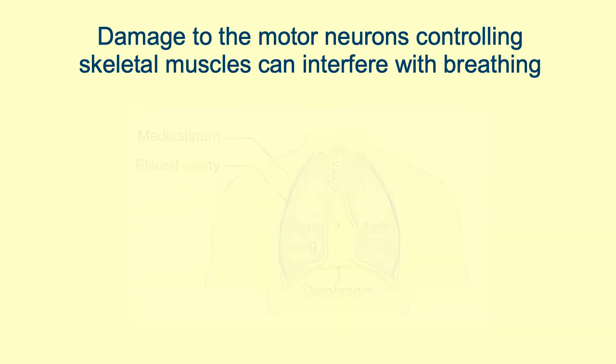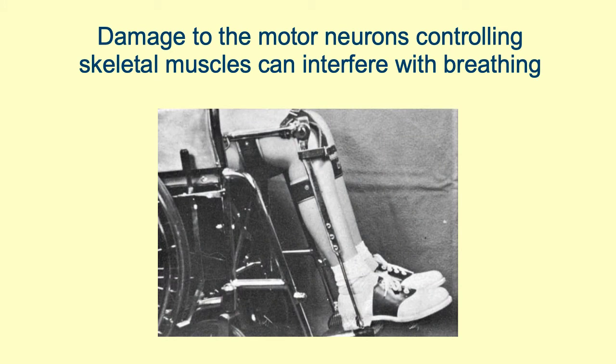Polio, short for poliomyelitis, is an infectious disease that can destroy motor neurons. If the poliovirus damages the motor neurons controlling respiratory muscles, breathing becomes difficult or impossible, which is of course life-threatening. During the polio epidemics of the 1940s and 1950s in the United States, thousands of people, mostly children, suffered this type of paralysis and were unable to breathe on their own.